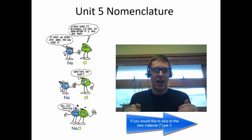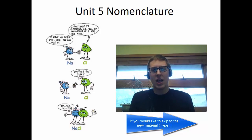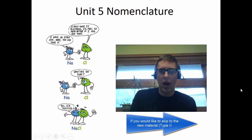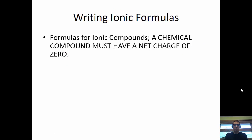Starting with ionic compounds like sodium chloride — ionic formulas are the symbols with the subscripts, the little numbers underneath them. A chemical compound must have a net charge of zero. This is very important to know about ionic compounds; that's why we can balance them out. It doesn't work with covalent compounds, which we will get to soon.